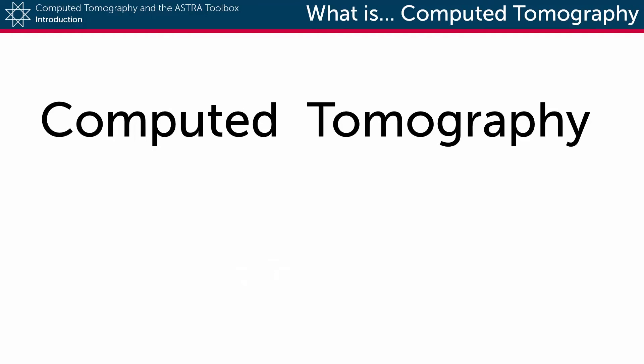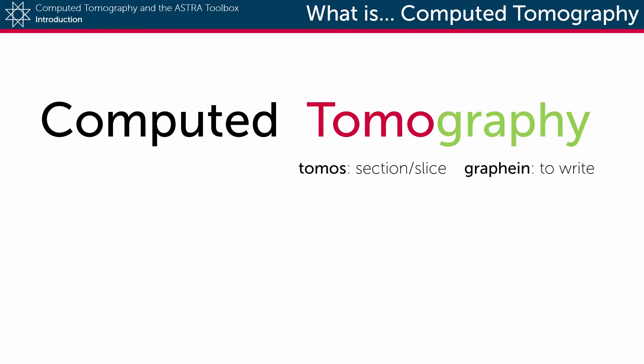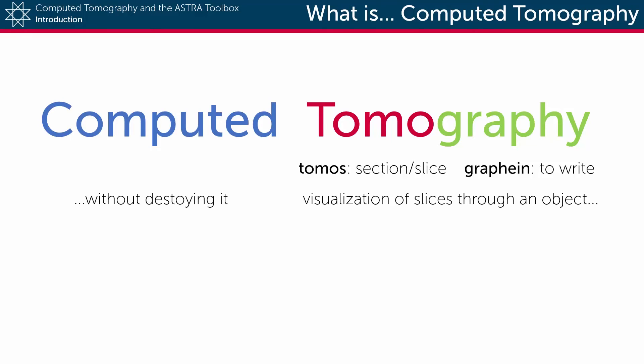The word tomography comes, maybe unsurprisingly, from two ancient Greek words: tomos, which means a section or a slice of something, and graphene, which means to write. So tomography is simply the visualization of slices through an object, and computed tomography is tomography in which this is done virtually and the object is not destroyed in the process.